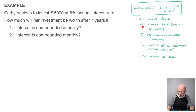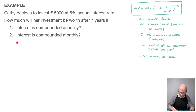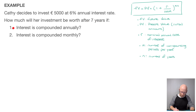This is the formula we'll be using for calculating compound interest, and we've defined each variable. Let's now see how to use it with the example on screen. We're told Kathy decides to invest 5,000 euros at a 6% annual interest rate. We're asked how much her investment will be worth after seven years if, first, interest is compounded annually, and second, if it's compounded monthly.